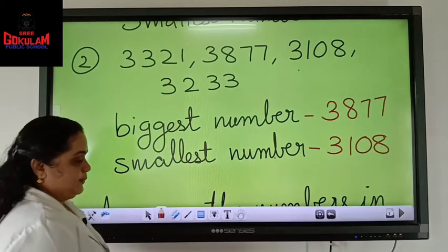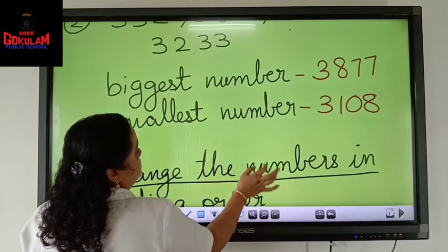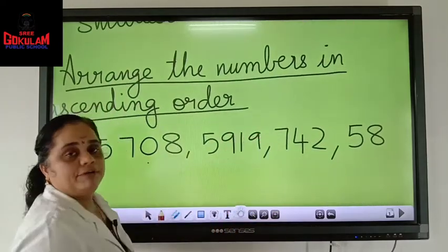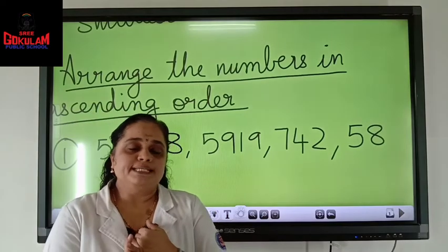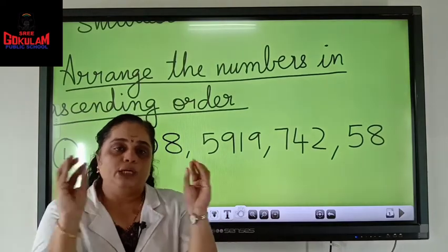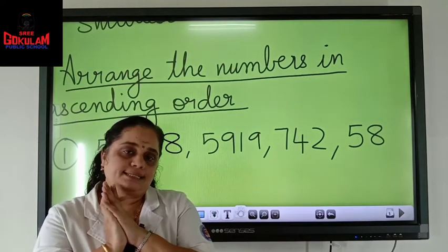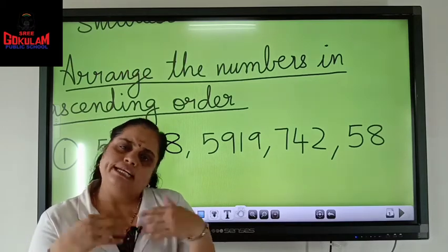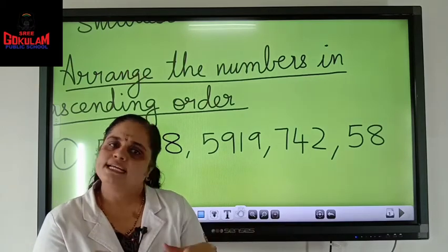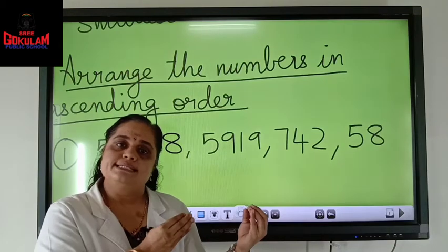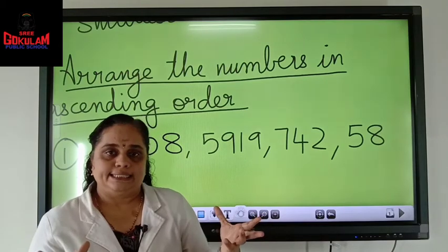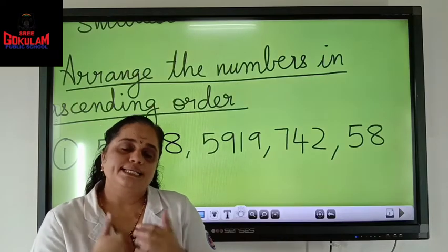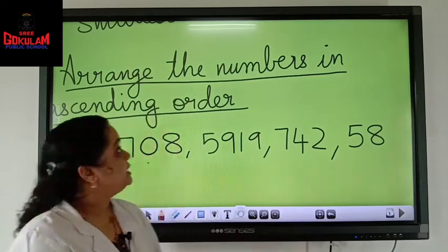Okay, children. These were the examples. I hope you will have an idea. So ordering numbers means you just have to see the group, count the number of digits. And if all numbers in the thousands place are different, it becomes easy for you — find the biggest number and the smallest number. Hope that is clear to you. Let's go for the next one.